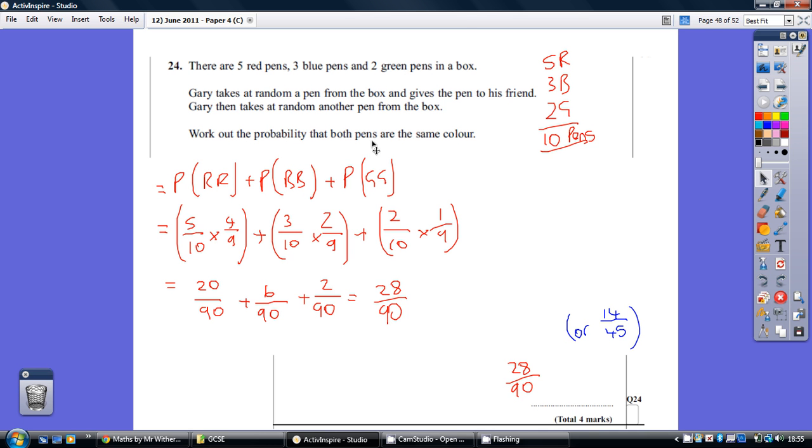to get pens of the same colour, we don't care whether it's two reds or two blues or two greens. That's why down here we're adding, because when it's an or, we add. So how do you add fractions if the denominator's the same? Well, you just add the numerators and leave the denominator unchanged.